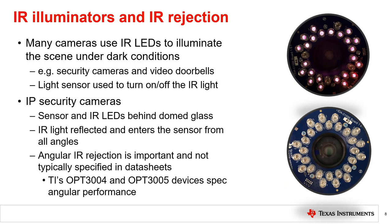IR rejection across angles can also be important. For example, in IP network cameras, the IR LEDs are commonly placed in a ring around the camera, as shown. While commonly placed behind glass, the IR light may reflect off the glass and enter the light sensor at all angles. This means the sensor should reject IR light coming from all angles, not just from zero degrees as typically specified. TI's OPT-3004 and OPT-3005 specify IR rejection over a range of angles of incidence for this reason, and the OPT-3005 is specifically designed for this type of application.